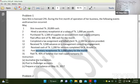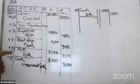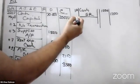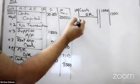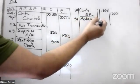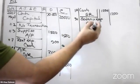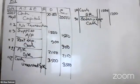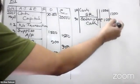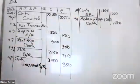You can see the salary expense debit. The cash credit is recorded accordingly.